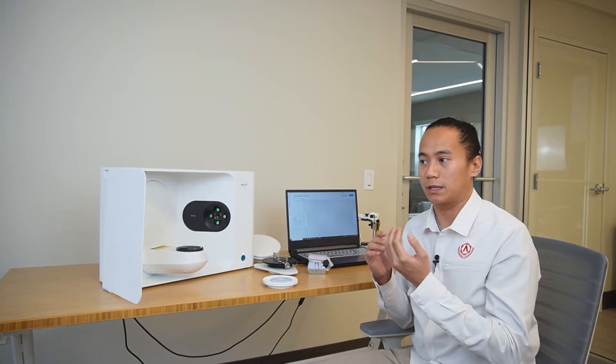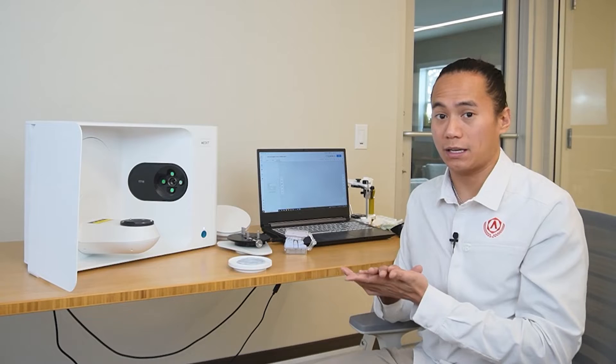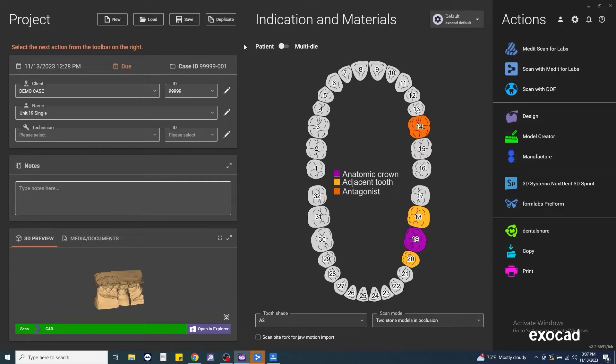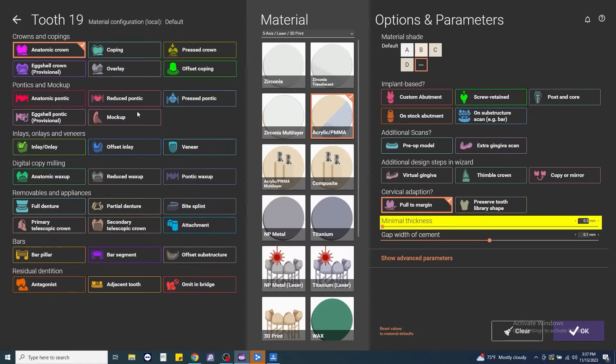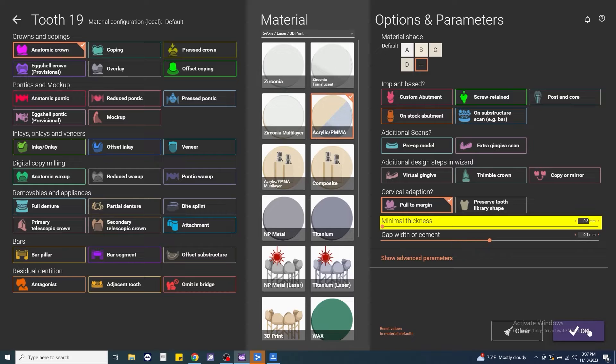Now, depending on whether you're going to be just scanning in Medit and sending those files out, having somebody else design your cases, you can set everything up in the Medit Link application. But if we are going to design in ExoCAD in-house, what we're going to do is set up the case in ExoCAD first. I've already set the case up in ExoCAD as a single unit crown. We're going to be working on number 19. Again, standard anatomic crown. We're going to be milling this in PMMA. And we're leaving all of the parameters here at default because we're not doing any implant-based restorations right now. We don't have a pre-op scan. We don't want to do a virtual gingiva. And we're pulling our crown to our margin line. So from there, we'll click OK.